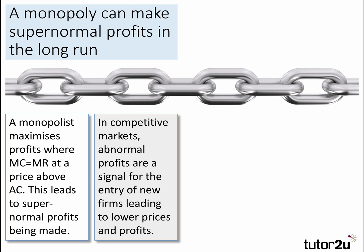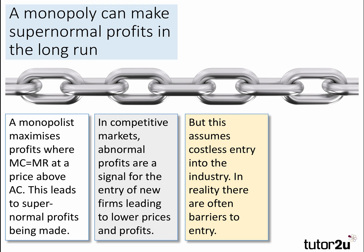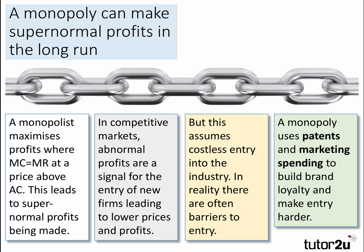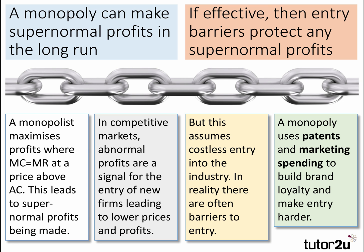In competitive markets, for example perfect competition, abnormal profits are a signal for the entry of new firms, and that leads to lower prices and lower profits. But this assumes costless entry into the industry. In reality there are often barriers to entry, and a monopoly is a market structure where the monopolist can use patents and marketing spend, amongst others, to build brand loyalty and make entry harder — increasing the cost of profitable entry into the market. If they're effective, and that depends on the nature of barriers to entry, then entry barriers protect any supernormal profits.